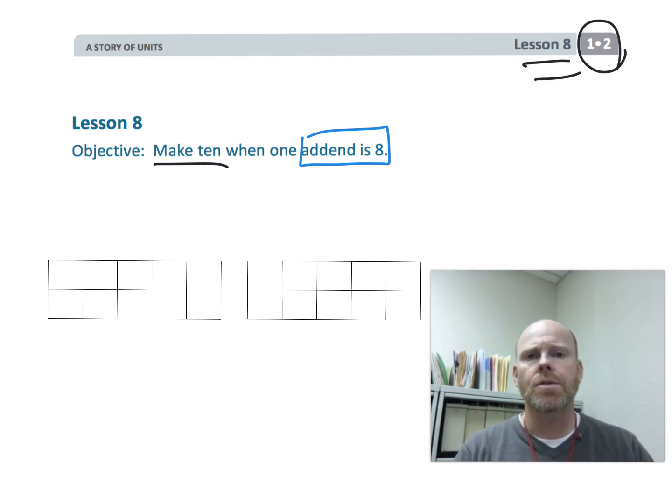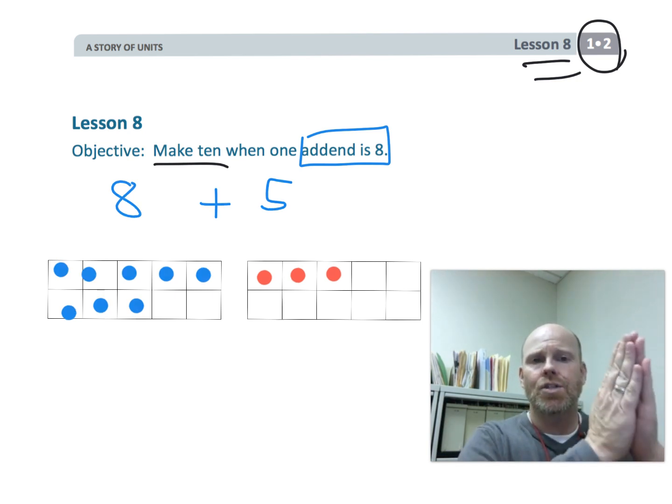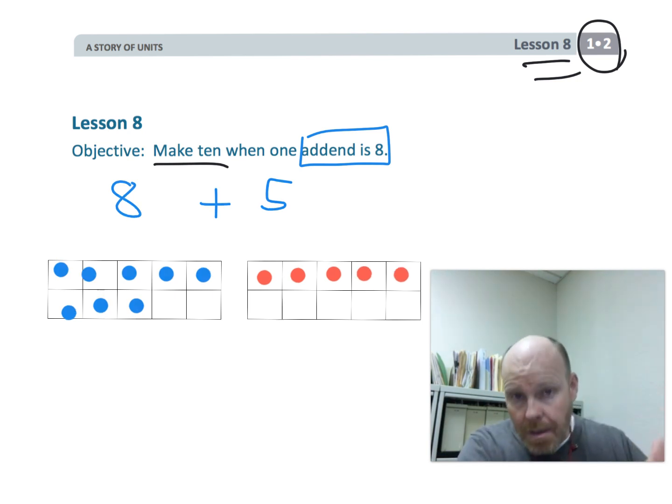I'm going to continue using the 10 frames. For example, if we have 8 plus 5, I'm going to model the 8 on the first 10 frame and the 5 on the second 10 frame. Then we're going to show that we can take two from the 5, move it over to fill in that first 10 frame. Now the new expression becomes 10 plus 3, which is of course 13. So let's get started.